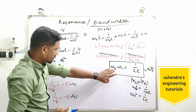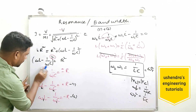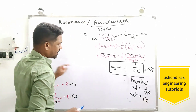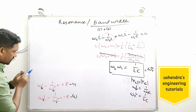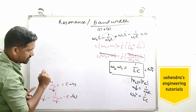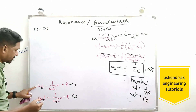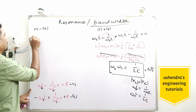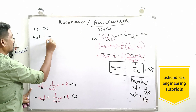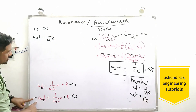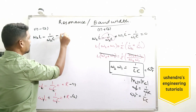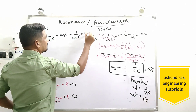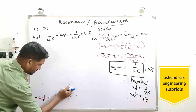Now subtracting equation 2 from equation 1: ω₂L − 1/(ω₂C) − (ω₁L − 1/(ω₁C)) = +R − (−R) = 2R. This gives: ω₂L − ω₁L − 1/(ω₂C) + 1/(ω₁C) = 2R. This is the result of subtracting equations 1 and 2.